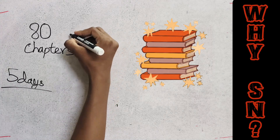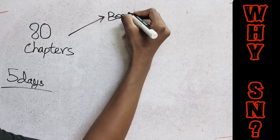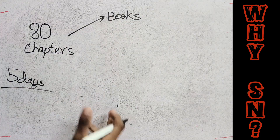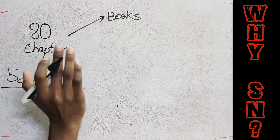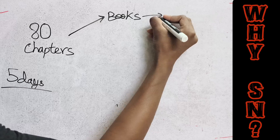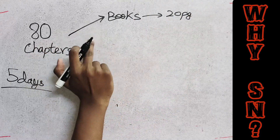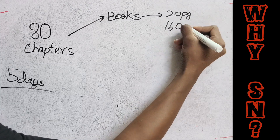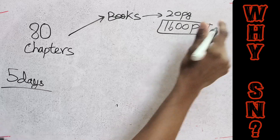First of all, books. Books are your NCERT, or your coaching module, or your other book resources. There are many pages in books — at least 20 pages per chapter. That's why there are 18 to 20 chapters, making around 1,600 pages total.